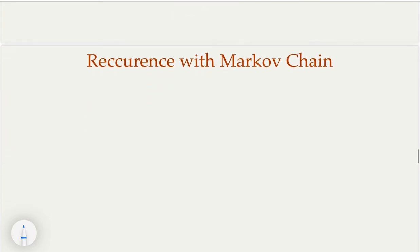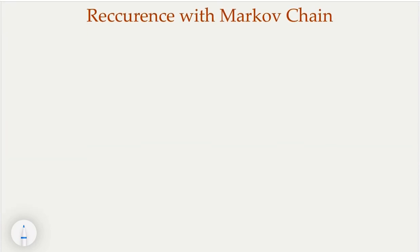Let's come to the third method — recurrence with Markov chain. For those of you who are not familiar with this concept, you may want to do some research about it. A Markov chain is very easy to model certain events where you have different states and different transition probabilities from one state to the next. The key property is that the next state only depends on the current state — not the history. This is called the memory-less property of the Markov chain or Markov process. It's a very powerful tool in probability.